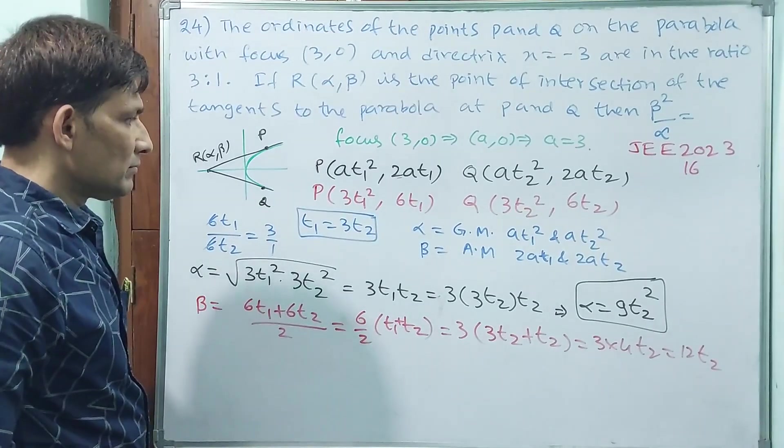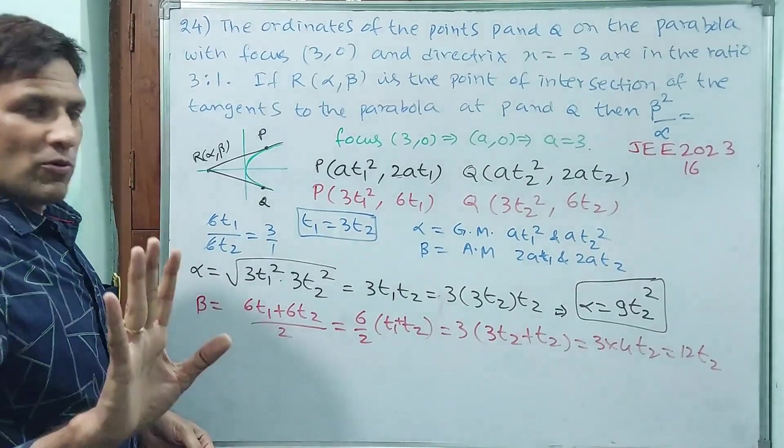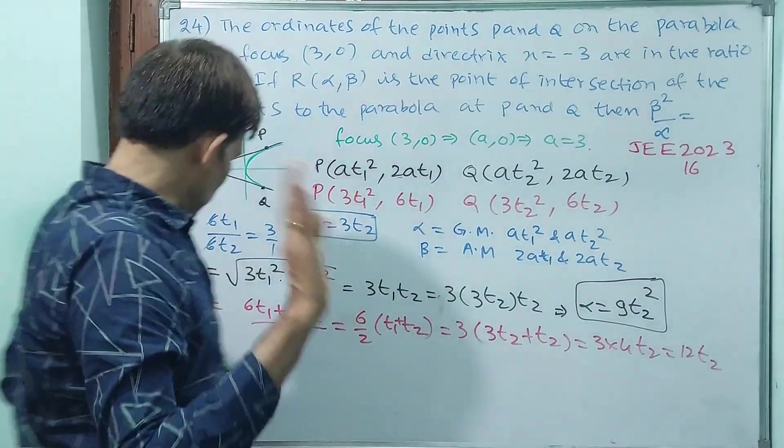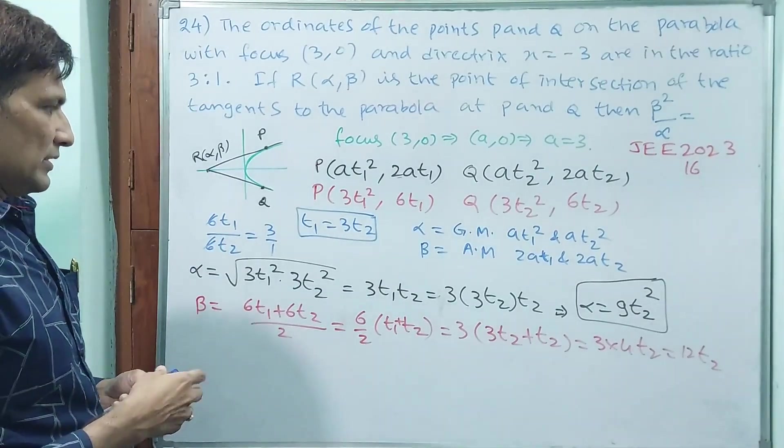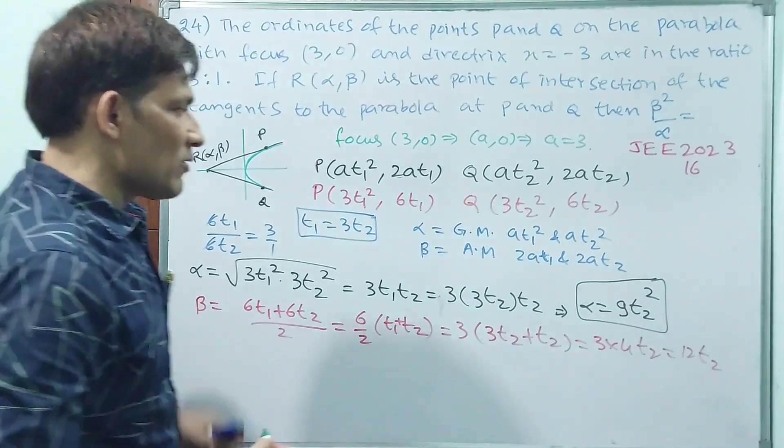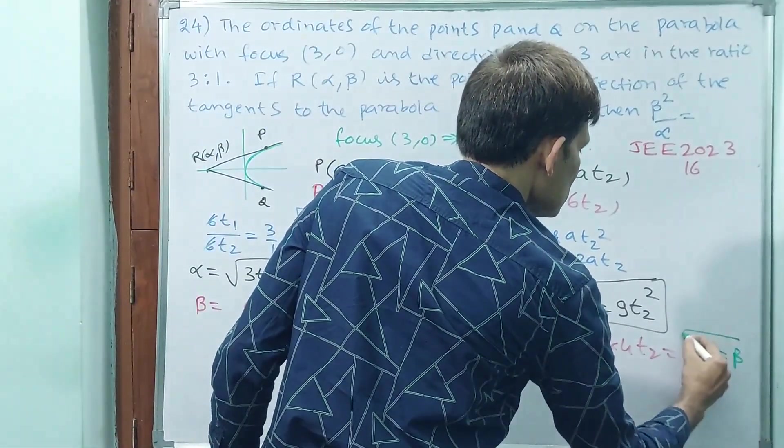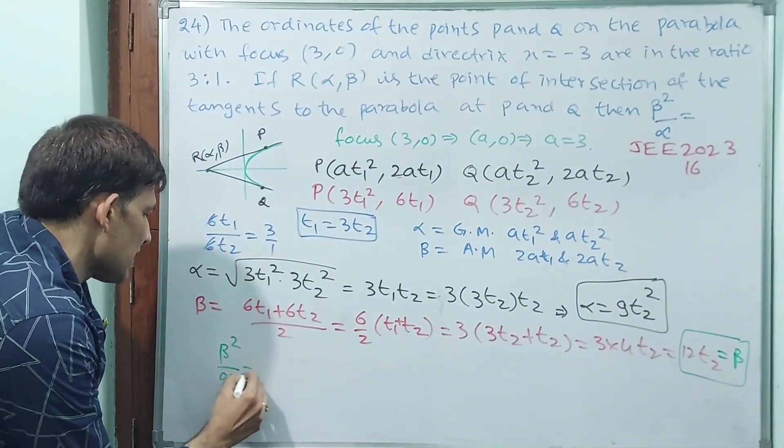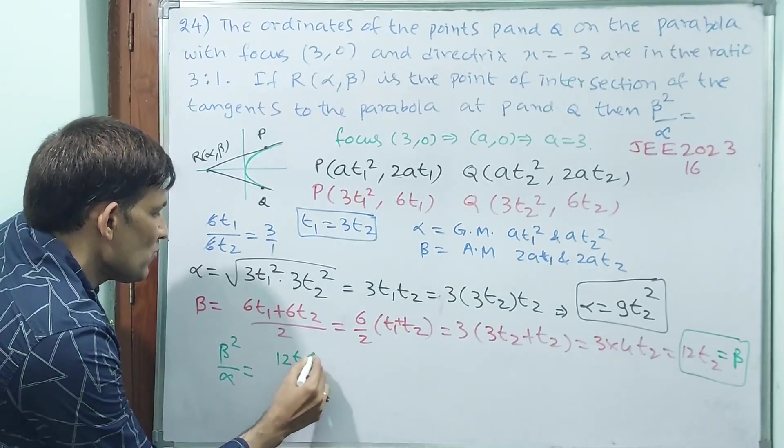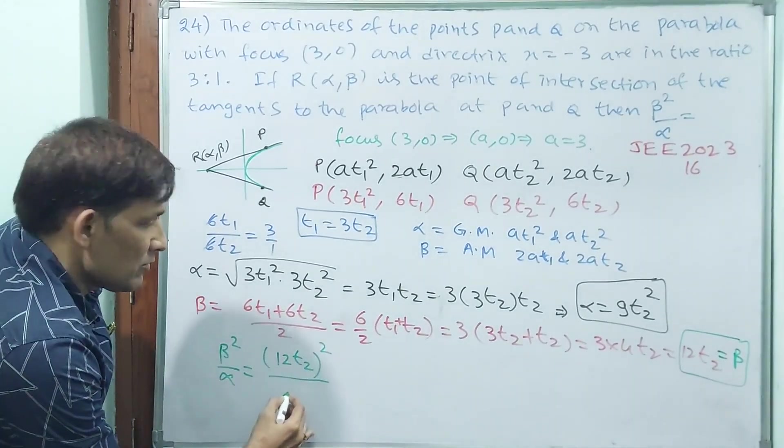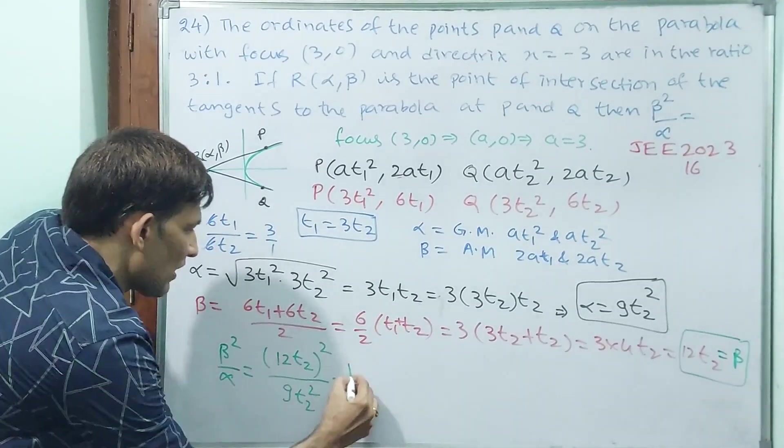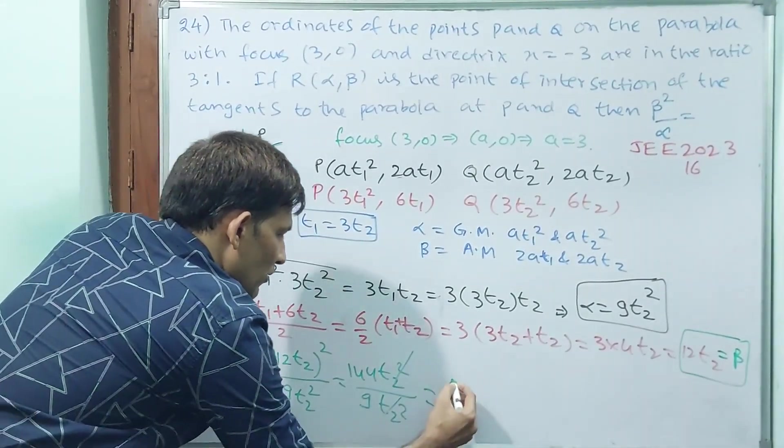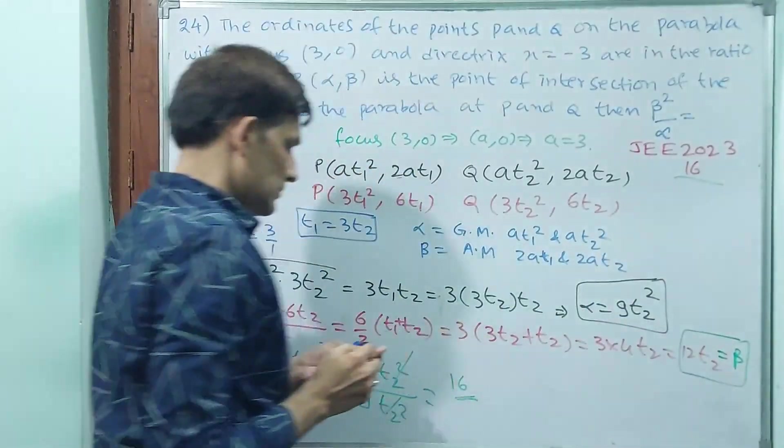Beta value finally goes into this. Now they are asking beta squared by alpha. Beta squared by alpha is equal to (12t₂)² by (9t₂²) = 144t₂²/9t₂². t₂² cancels out. 144 by 9 is 16.